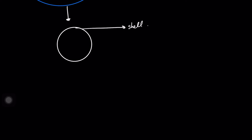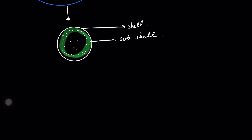Within this shell, the electrons tend to occupy certain regions the most. Sometimes, spontaneously, electrons might appear in other places, but most of the time the electron tends to be somewhere in this green region. This green region is what we call a subshell.